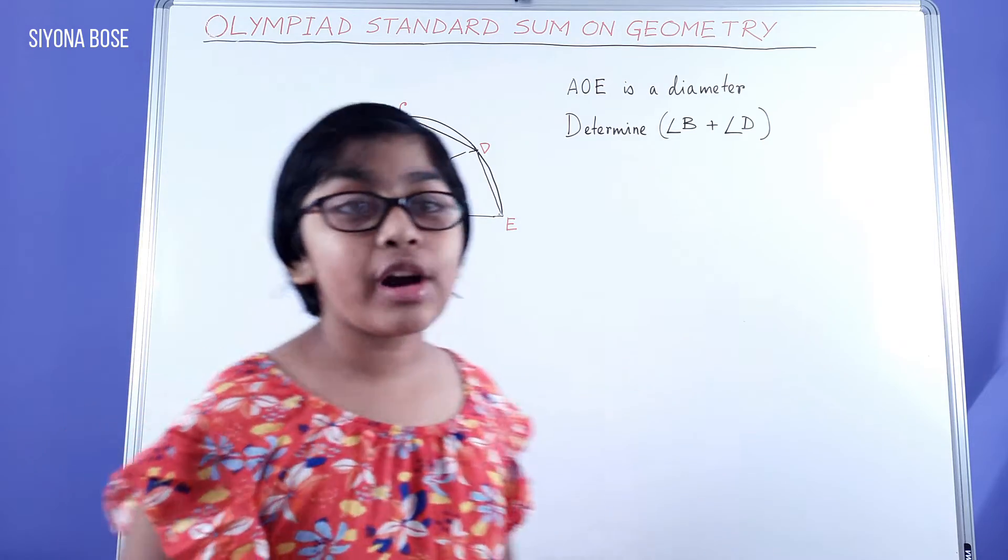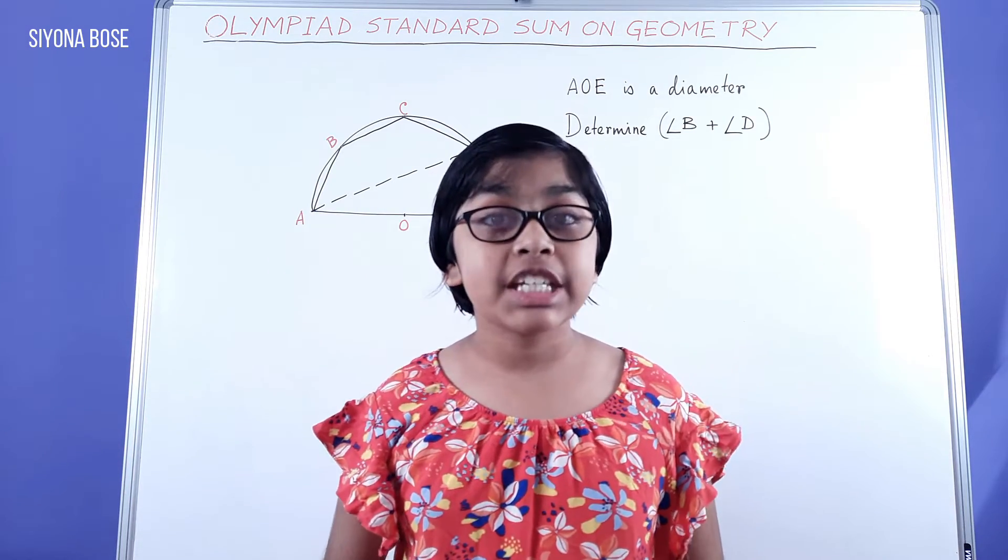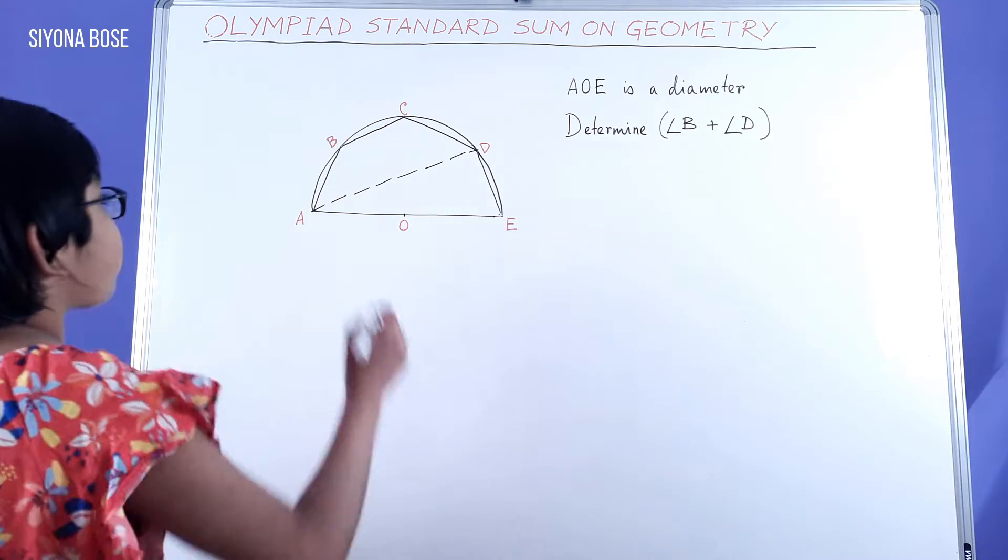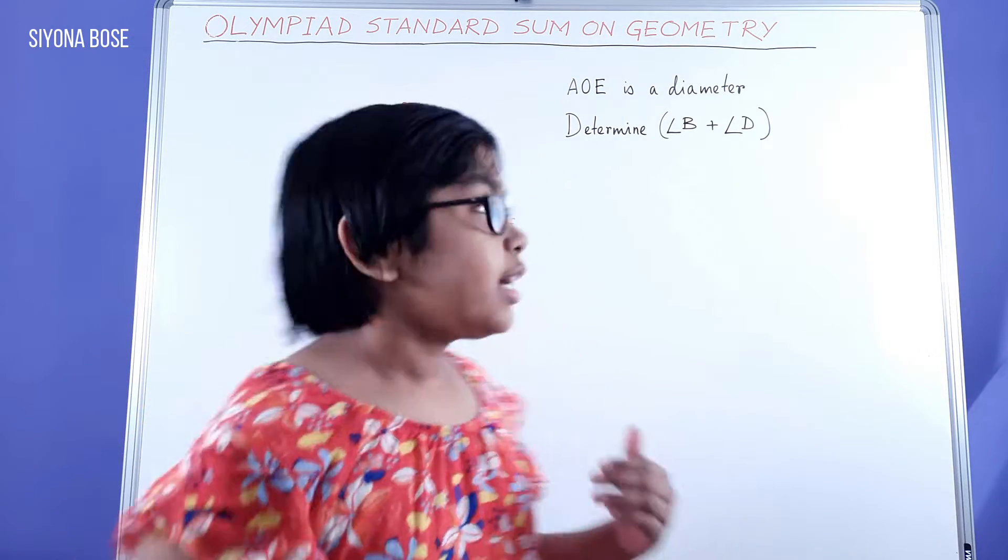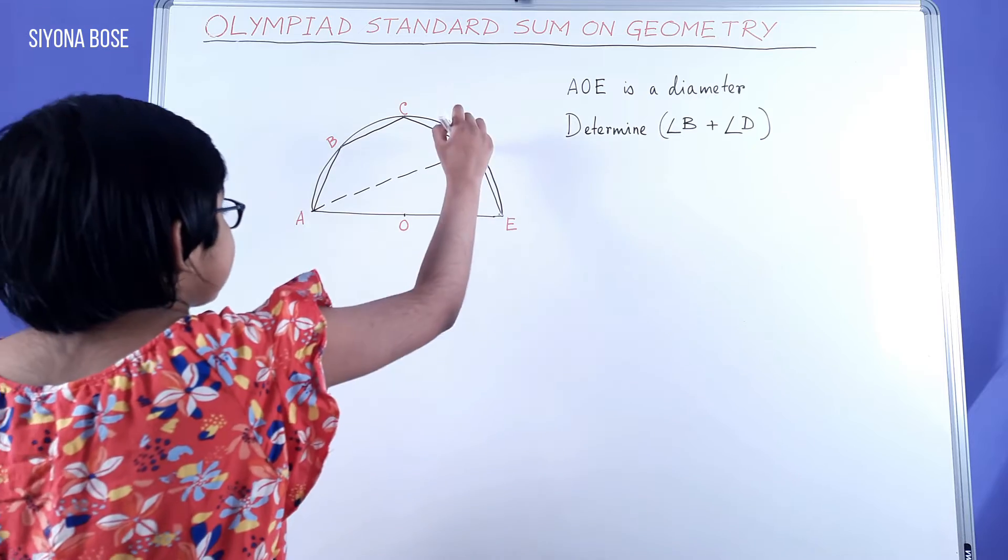Now, by joining A and D, we have two parts: first, a quadrilateral ABCD, and triangle ADE.